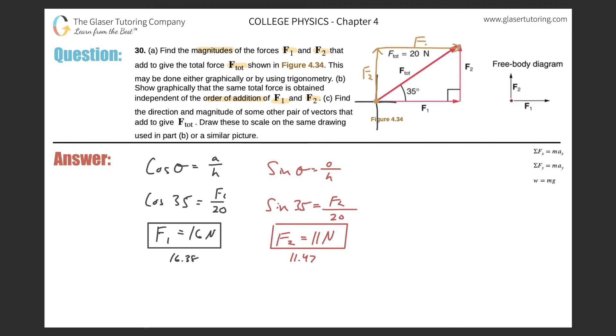Letter C. So it says find the direction and magnitude of some other pair of vectors that add to give the total. So let me first draw for this letter. So let's, this was part A. I did part B up here. And now let me do part C. So let me just draw a right triangle.